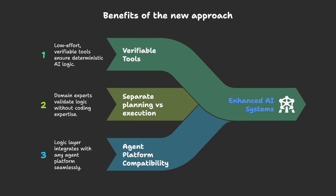This is huge for three reasons. One, it gives you a low-effort way to build verifiable deterministic tools — no ambiguity, just verifiable logic. Two, it separates planning from execution. A medical expert can validate the tool logic without knowing Python. A finance person can own the pricing rules without touching the code. This unlocks domain expertise that has been locked out of AI systems. Three, the logic layer can be used with any agent platform.